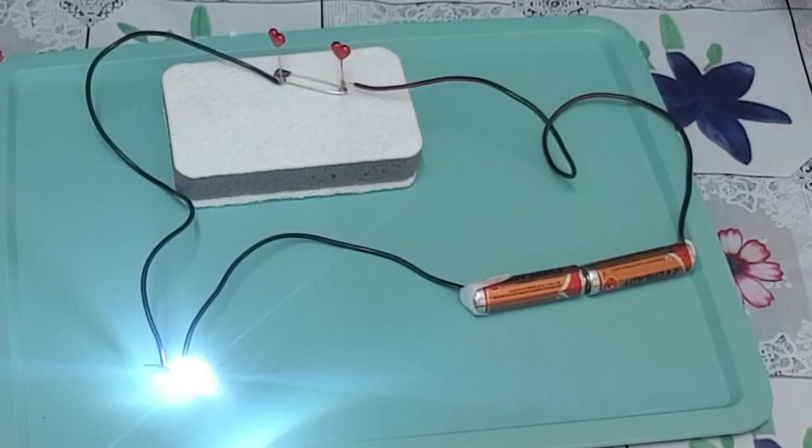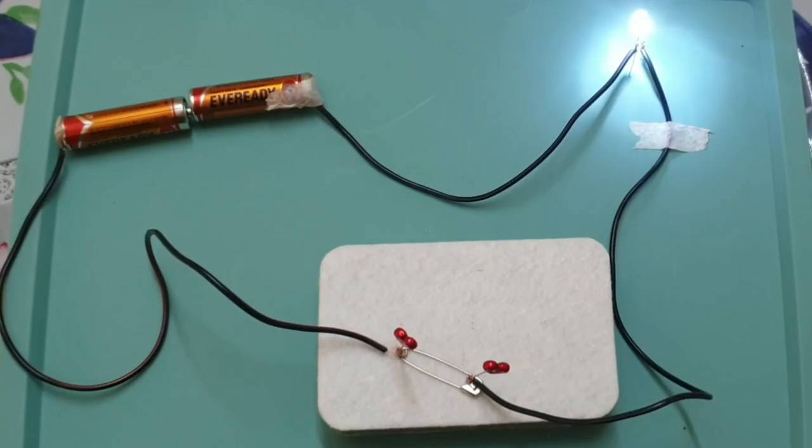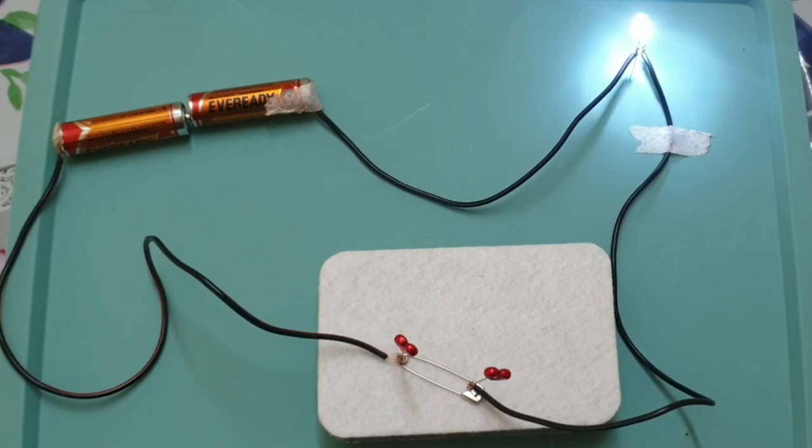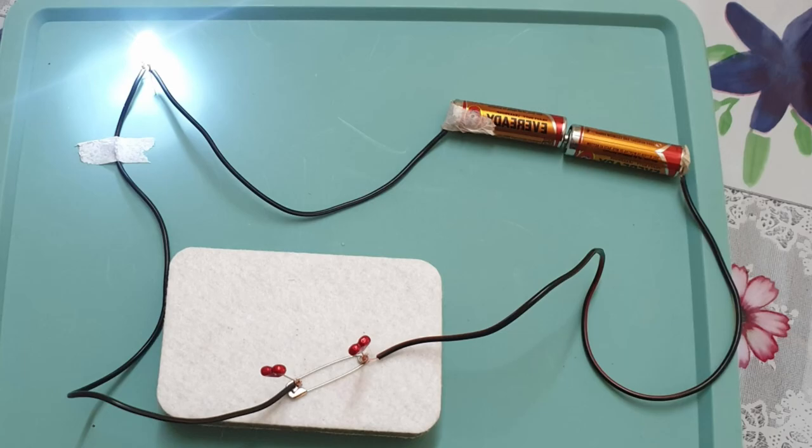An electric cell produces electricity from the chemicals stored inside it. When the chemicals in the electric cell are used up, the electric cell stops producing electricity. The electric cell then has to be replaced with a new one.